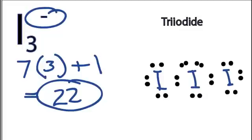So we've used all 22 of the valence electrons that we had available, and it's kind of a strange structure. So let's check our formal charges, just to make sure that we have the best Lewis structure for I3 minus.